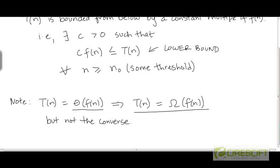But the converse is not true. If we are given that t is Big Omega, it does not necessarily imply that t is also Big Theta. For t to be Big Theta, it needs to be not only bounded from below by a constant multiple of f, but it also needs to be bounded from above by a constant multiple of f. So for t(n) to be Theta, it needs to be both Big Omega and Big O.